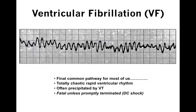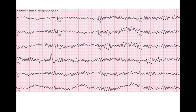Ventricular fibrillation is a rhythm incompatible with life — very fast, chaotic activity within the ventricles that leads to the heart not beating. It's depolarizing so fast and chaotically that normal beating does not occur, and it's fatal unless terminated with a defibrillator shock. Here is a 12-lead ECG of ventricular fibrillation: fast, chaotic rhythm has replaced the QRS complexes. Surgeons describe this as looking at a bag of worms — the whole heart is jiggling but not actually beating.